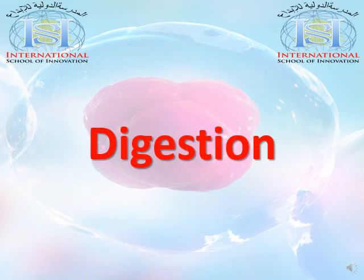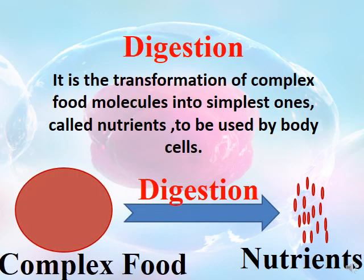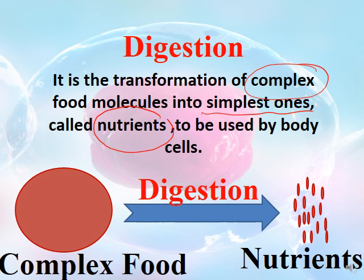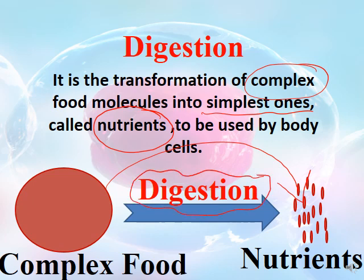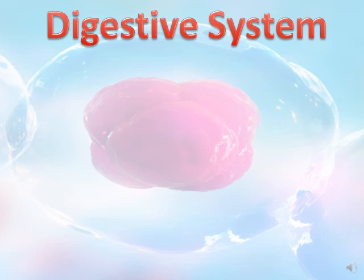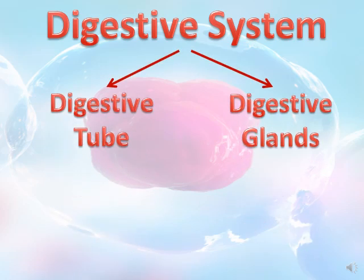Let's start with digestion. Digestion is the transformation of large and complex food molecules into simpler ones. These are called nutrients, to be used by the body cells in order to produce the energy needed. So whenever complex food transforms into nutrients, this process is called digestion.